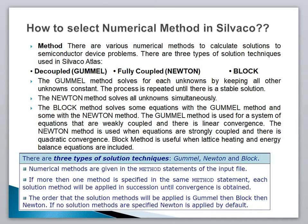Let's start with how to select a numerical method in Silvaco Atlas. There are various numerical methods to calculate solutions to semiconductor device problems. There are three types of solution techniques used in the Silvaco tool. The first method is Gumel, the second is Newton, and the third is Block. The Gumel method is also called the decoupled solution, and the Newton method is applied where a fully coupled solution is required.